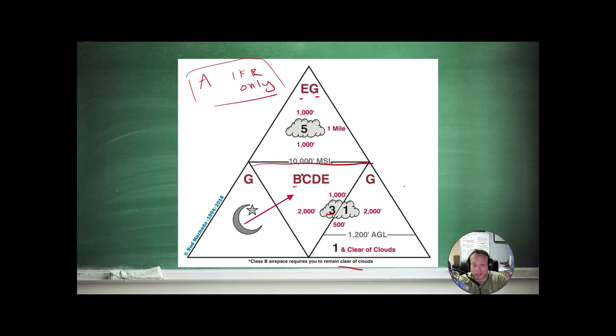Golf airspace is on the flanks. At night, it becomes 3,152. In the daytime, below 1,200, you need one mile and clear of clouds. Super easy. One mile clear of clouds in class golf. Above 1,200, you need one 152. That's the one here. One mile visibility, 1,000 above, 500 below, 2,000 horizontal separation.